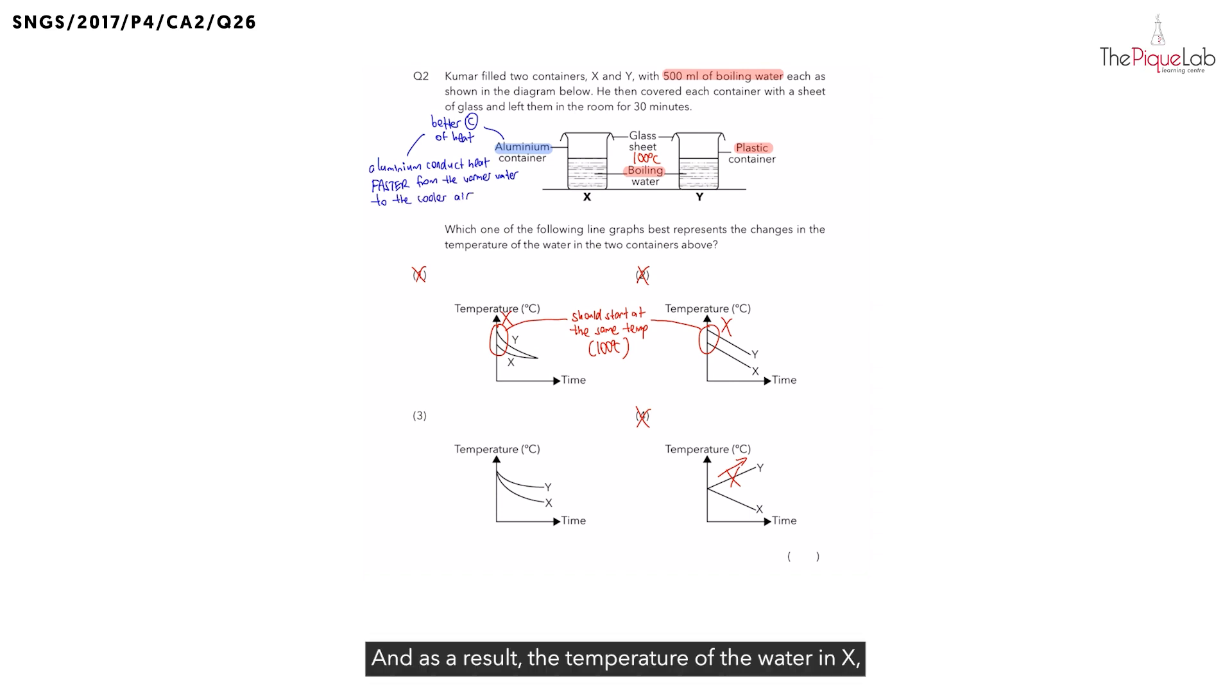And as a result, the temperature of the water in X, is it going to decrease faster or slower? The temperature of the water in X is going to decrease faster. So let's write this out. We know that the temperature of water in X is going to decrease faster compared to the water in container Y.